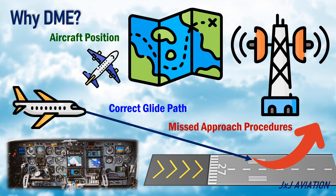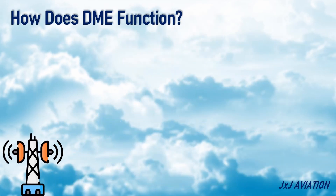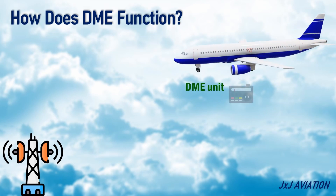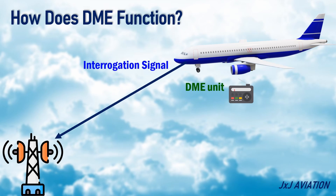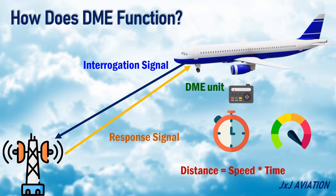Now let's look at how the DME functions. For processing the DME information, the aircraft should have a DME unit. This unit transmits an interrogation signal to the DME ground station. The ground station receives the signal, processes it, and sends a response signal to the aircraft. The aircraft measures the time between the signal transmission and the reception, and since the signals travel at the speed of light, the distance between the aircraft and the ground equipment can be calculated.